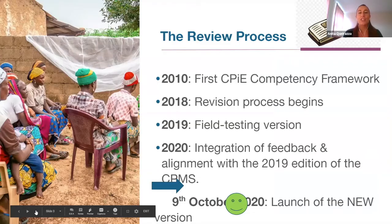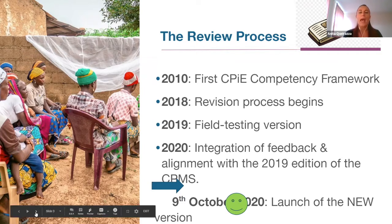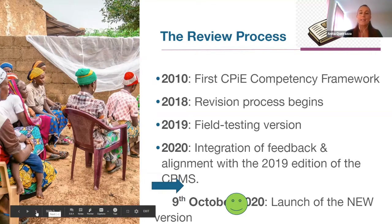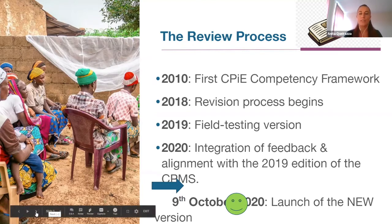This is not a new competency framework — it's rather a revised version of the 2010 framework developed by the former Child Protection Working Group. In 2018, the Learning and Development Working Group began revising it. The revision process was informed by a desk review, a survey, and key informal interviews with practitioners across regions. In 2019, a field testing version was made available, and in 2020, we made further adjustments to integrate feedback from practitioners across regions, from working group and task force leads, and to ensure full alignment with the 2019 edition of the CPMS.